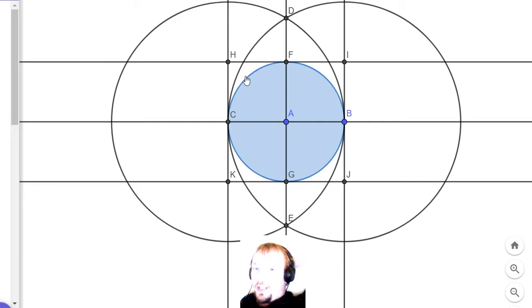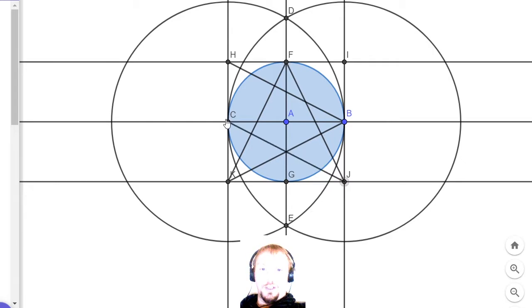Now what we need to do is create an eight-pointed star within our new earth square. So here we go from H to B to K to F to J to C to I to G to H. There's our lovely little star.